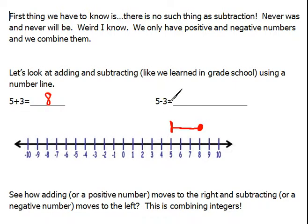Now let's also look here at 5 minus 3. We know 5 minus 3 is 2. So if we were to start at 5 and then take away 3 units, we would go backwards, 1, 2, 3 units and end up at 2. So we know that 5 minus 3 is 2 and 5 plus 3 is 8.